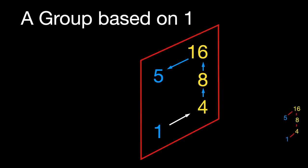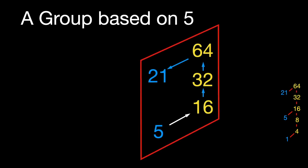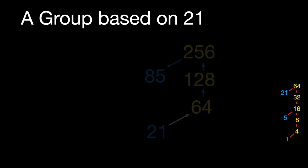Applying C3 once, we can get the group containing 5. Applying C3 again to 5, we get the group containing 21. And again, to get 85.